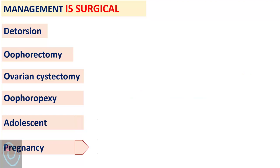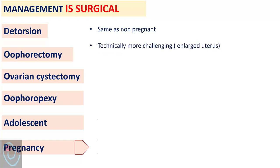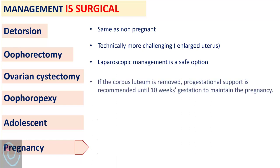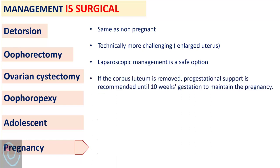Regarding ovarian torsion in pregnant women, management is similar to non-pregnant patients but can be technically more challenging due to the enlarged uterus. Laparoscopic management is a safe option. However, if the corpus luteum is removed, progestational support is recommended until 10-week gestation to maintain the pregnancy.